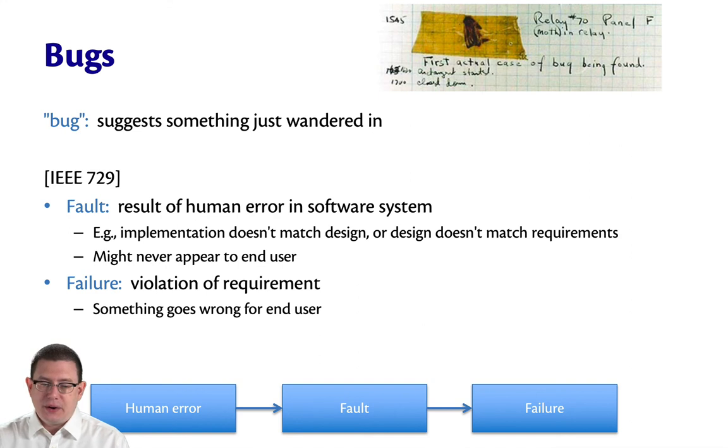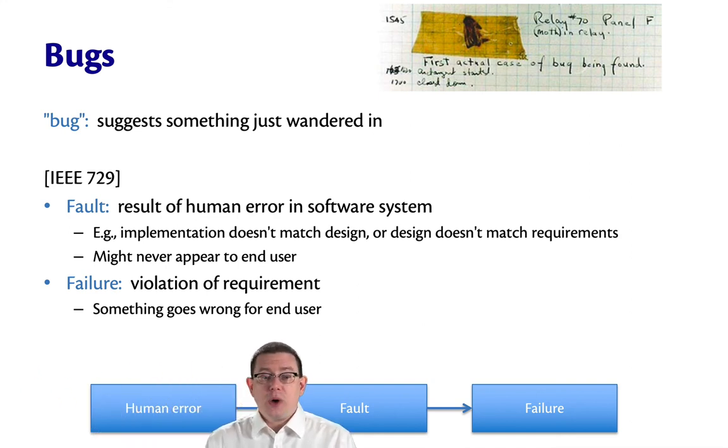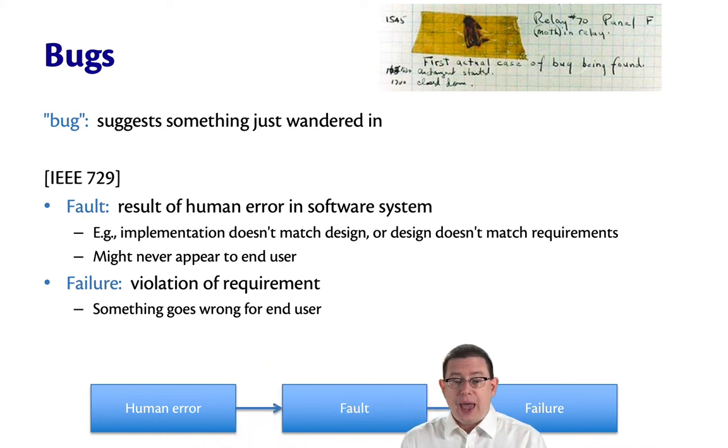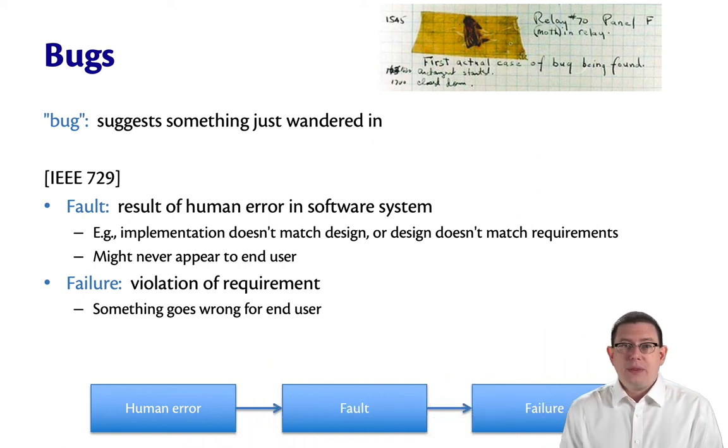Notice the chain of events here. There's a human error. That leads to a fault. And the fault might eventually lead to a failure. This is a better way of thinking about errors in software systems than the word bug.